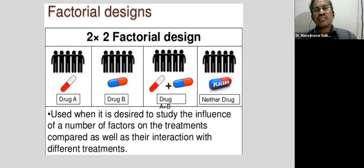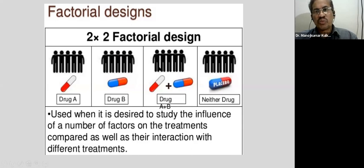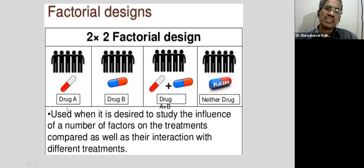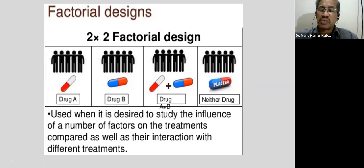We also have factorial design, where instead of two groups, suppose you have to compare the effectiveness of two drugs A and B. We divide the sample into four groups: one group receives only drug A, another only drug B, a third group receives both drugs A and B, and the fourth receives neither. Similarly for two teaching methods: group one receives method A, group two method B, group three both methods, and group four neither — then evaluate. This study design is called factorial design.